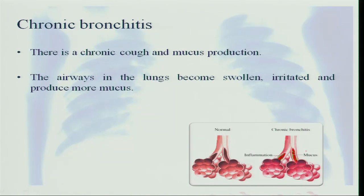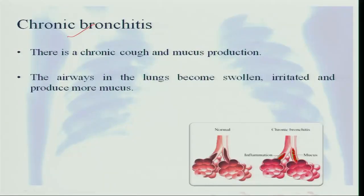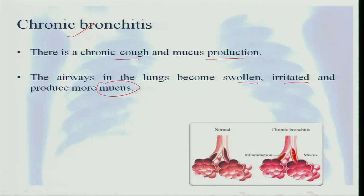Initially it starts with acute bronchitis, a small episode of inflammation of the bronchi, which are the airways. When these episodes continuously recur, it becomes chronic bronchitis. In chronic bronchitis, there is chronic cough and mucus production — the airways in the lung become swollen and irritated, producing more mucus. You can see the airways filled with mucus, making breathing very difficult and causing cough as the mucus blocks the airways.